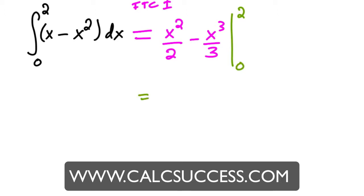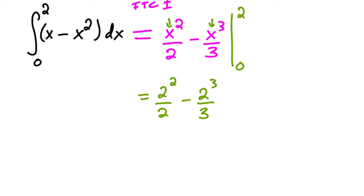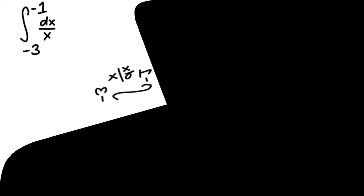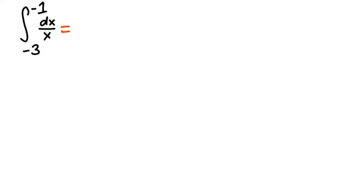Plugging in 2 gives us 2 squared over 2 minus 2 cubed over 3, and then minus the result of plugging in 0, which equals 0 in this case. So we have 2 minus 8 thirds. Since 2 is 6 thirds, that gives us negative 2 thirds.